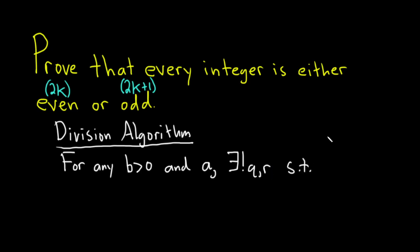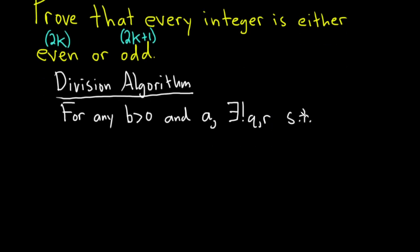there exists unique q and r, again, these are integers, such that we have the following equation. We can take a, and we can write it as bq plus r. And r has a restriction, it's strictly less than b and greater than or equal to 0.